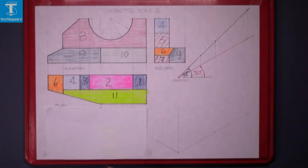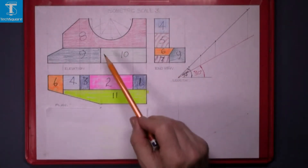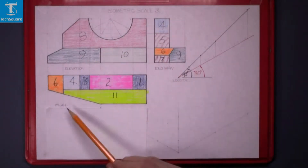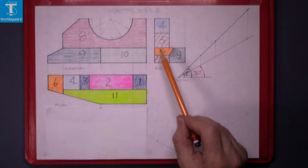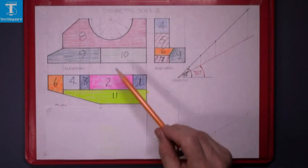Isometric Scale 3. Given the elevation, the plan and the end view of this solid.